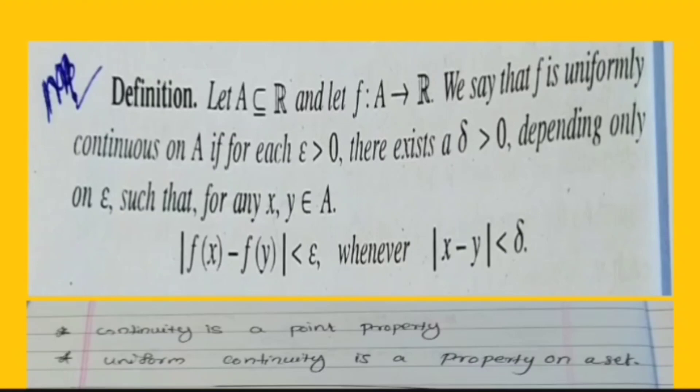For any two points x and y belonging to A, if |f(x) minus f(y)| is less than epsilon, whenever the mode of x minus y is less than delta. This is the definition.